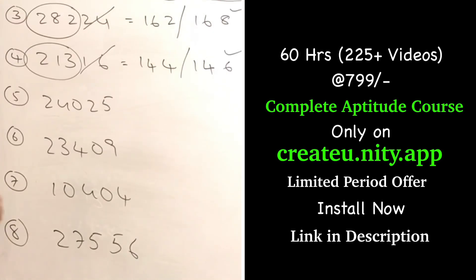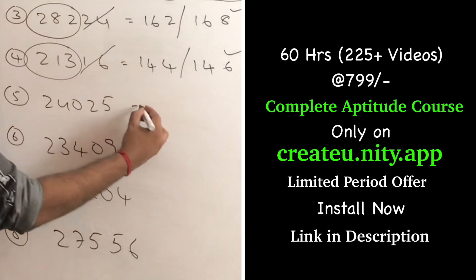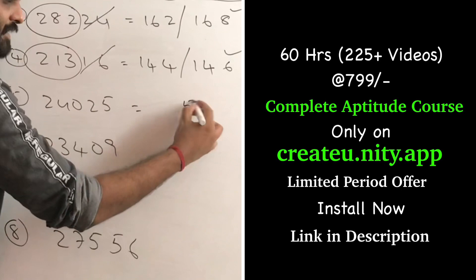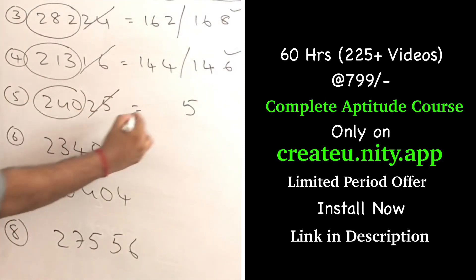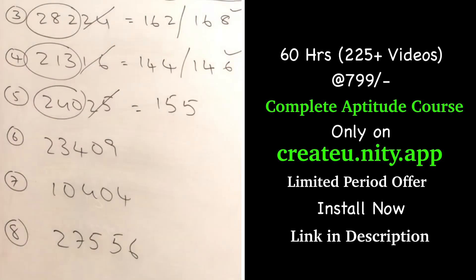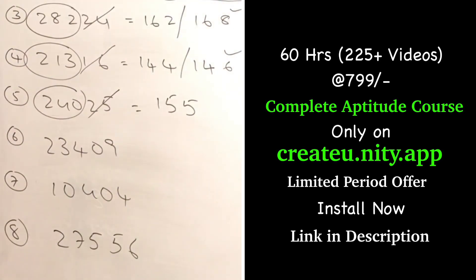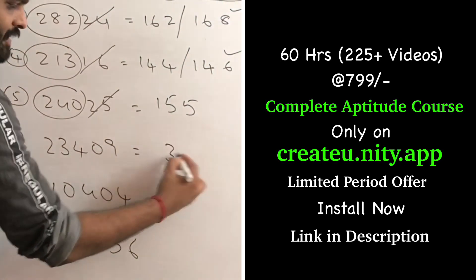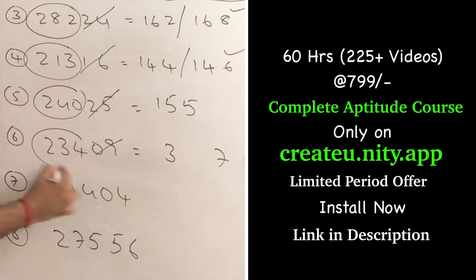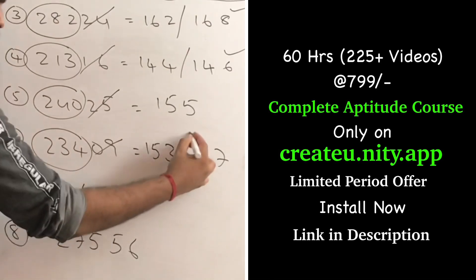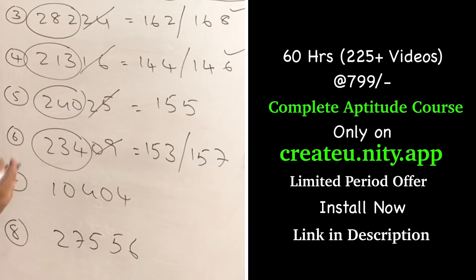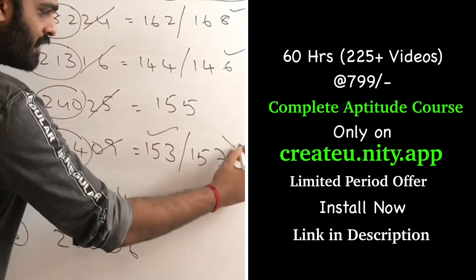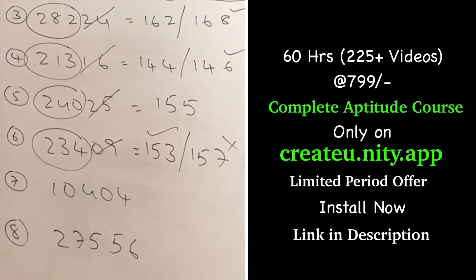For 24025, it is comparatively easy because my answer should end with 5. It has to end with 5. And 240 is more than 15 square, so my answer will be 155. For 23409, my answer should end with 3 or 7. And 234 is more than 15 square, so it should be 153 or 157. Since 234 is close to 15 square and not close to 16 square, my answer will be 153 — it can't be 157.